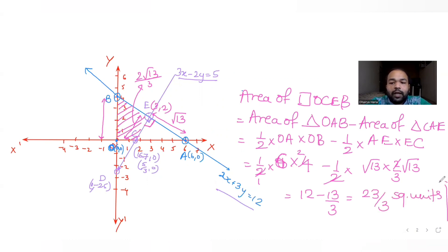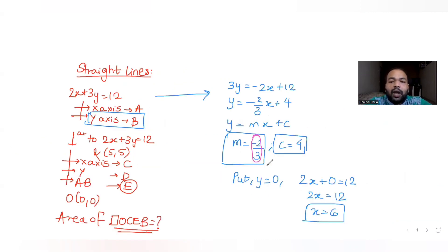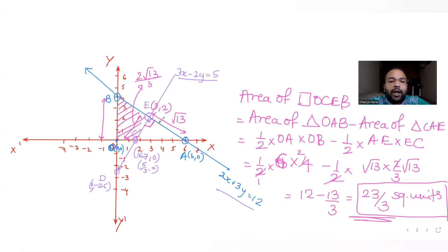So we get the area of the quadrilateral OCEB, which comes out to be 23/3 square units. To summarize: first we found the slope and y-intercept for the given equation of line 2x plus 3y equals 12, and also found the points of intersection A and B with the x and y axes. Then we found the equation of the perpendicular line passing through (5, 5), giving us 3x minus 2y equals 5.